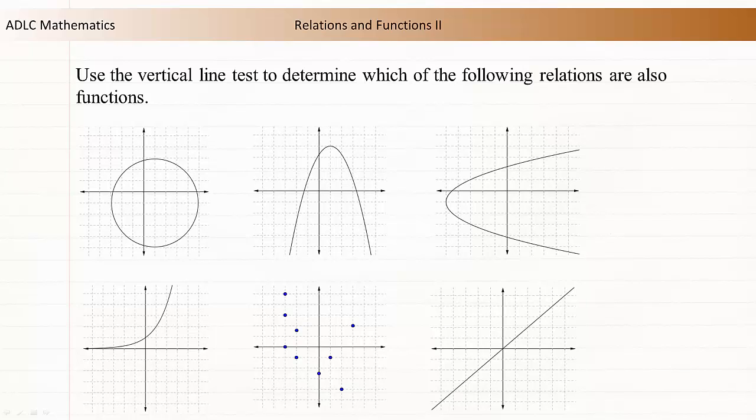If a vertical line can be drawn anywhere on the graph so it passes through more than one point, the graph does not represent a function.